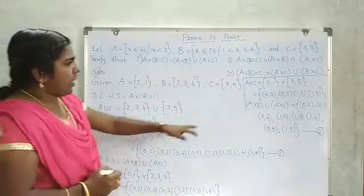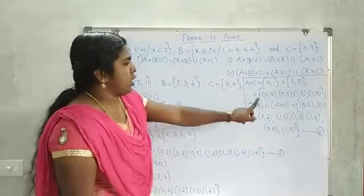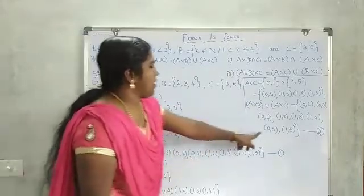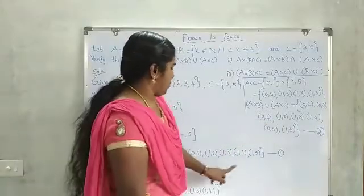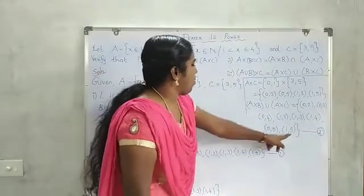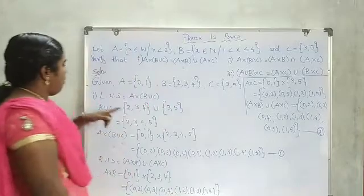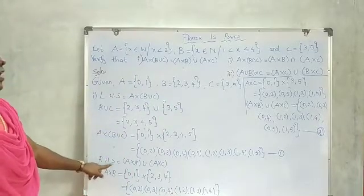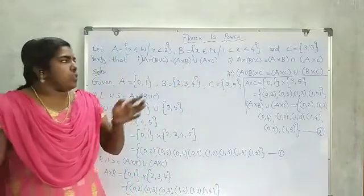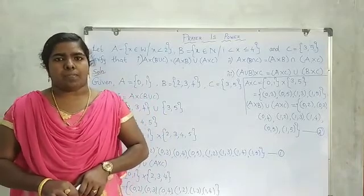Comparing equation 1 and equation 2: (0,2),(0,3),(0,4),(0,5),(1,2),(1,3),(1,4),(1,5) — both are equal. Therefore LHS is equal to RHS. The remaining 2 questions we will follow in the next episode. If you like this video please press the like button, and if you haven't subscribed please subscribe. Thank you.